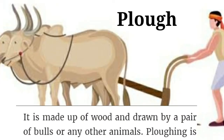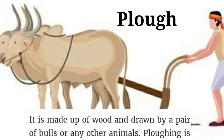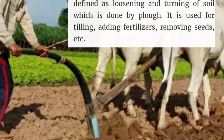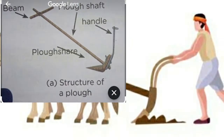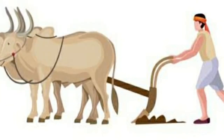A plow is made of wood and drawn by a pair of bulls or other animals. Plowing is defined as loosening and turning of soil. It is used for tilling, adding fertilizers, and removal of weeds. A plow contains a strong iron strip called the plowshare and a long log of wood called the plow shaft. There is a handle on one end, and another handle is attached to a beam placed on the bull's neck. It can be operated by a pair of bulls or a man.